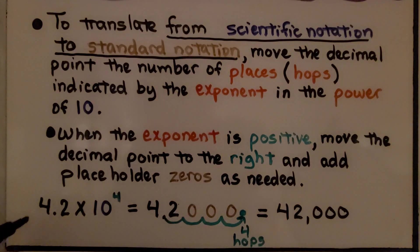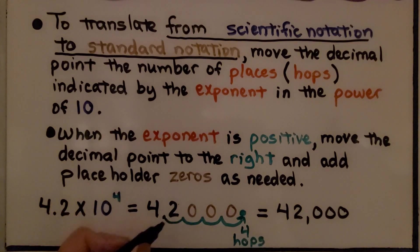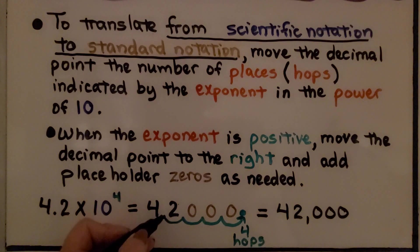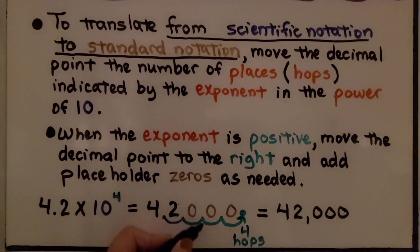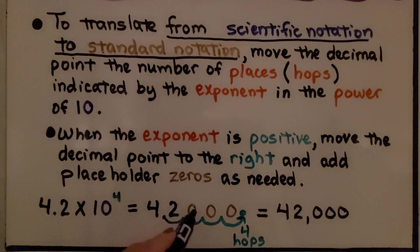In scientific notation, we have 4.2 times 10 raised to the fourth power. We move the decimal point to the right, because this exponent of 4 is positive — 1, 2, 3, 4 hops. That gives us 42,000 when we use placeholder zeros.